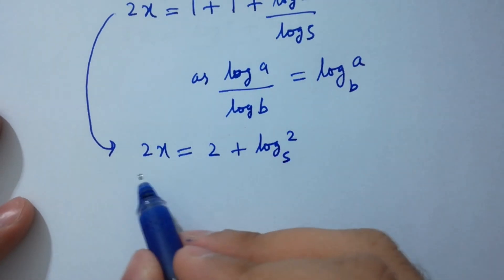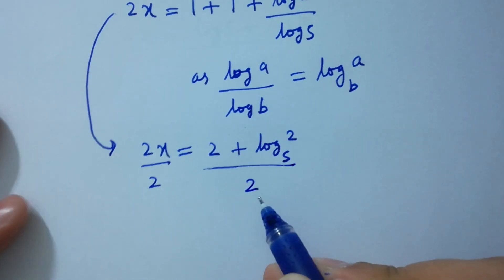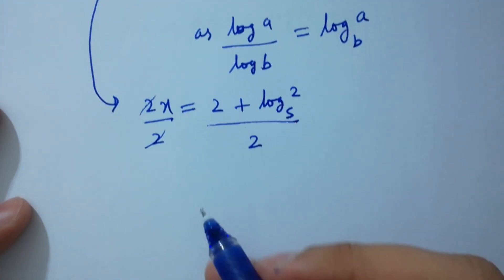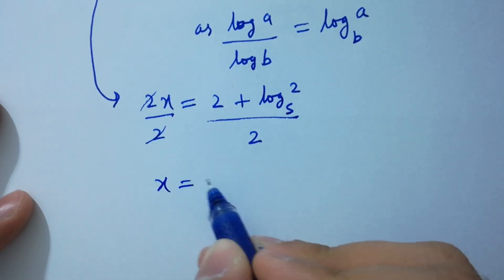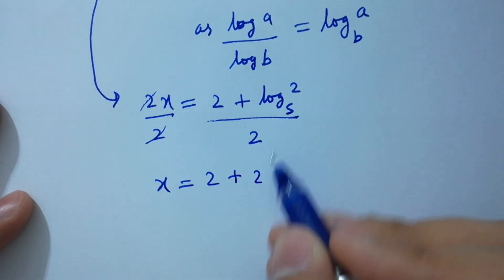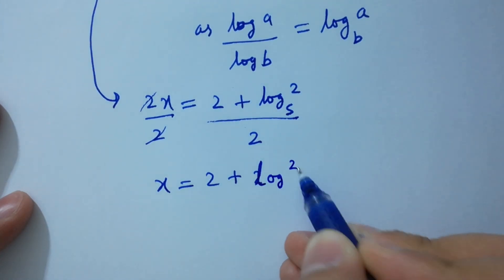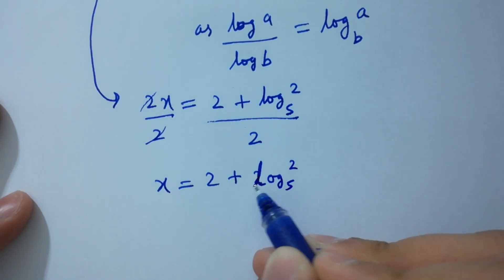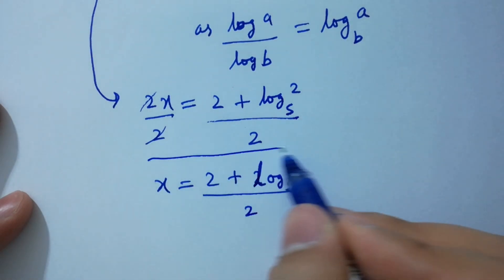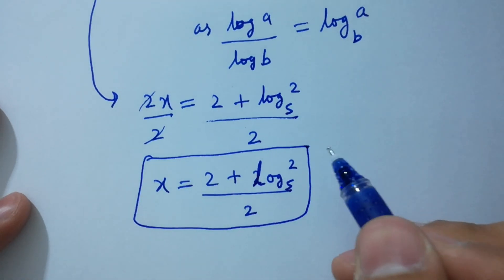Divide by 2 on both sides — 2 and 2 cancel — giving x equals (2 plus log 2 to the base 5) over 2, which is the value of x.